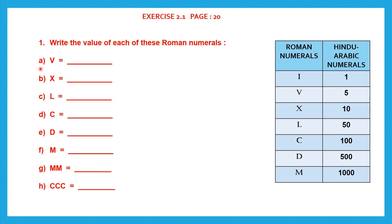Let's begin. Write the value. The first one is V — the value of V is 5. Then X — the value of X is 10. Then L — the value of L shown in the table is 50. Then C — the value of C is 100. Then D — the value of D is 500. Then M — the value of M is 1000. So here you can see all seven symbols and their values written.